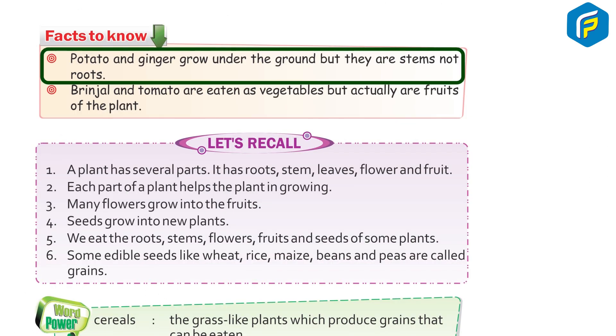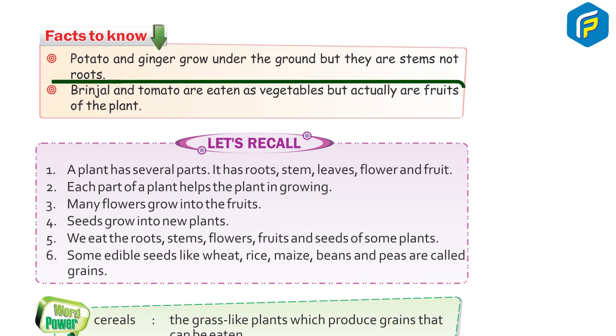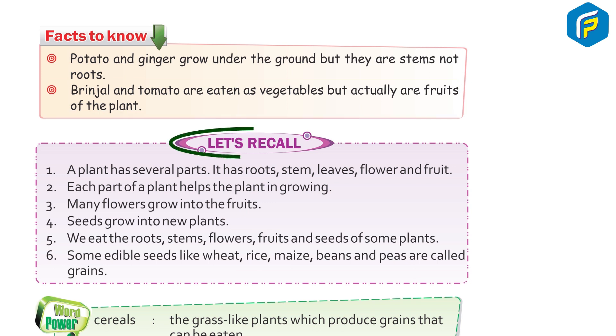Facts: Did you know? Potato and ginger grow under the ground, but they are stems, not roots. Brinjal and tomato are eaten as vegetables, but they are actually fruits of the plants.